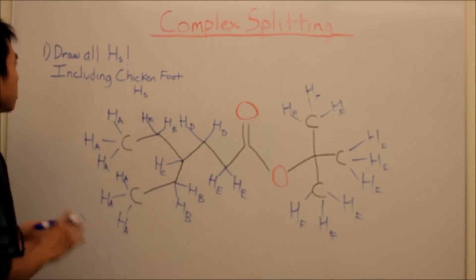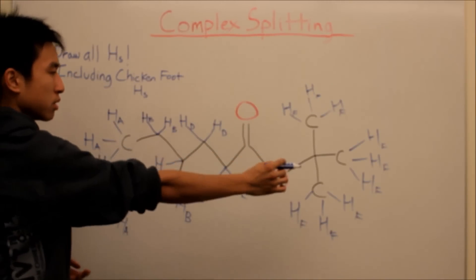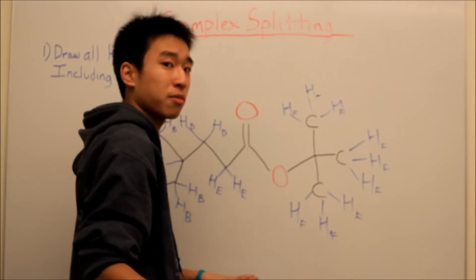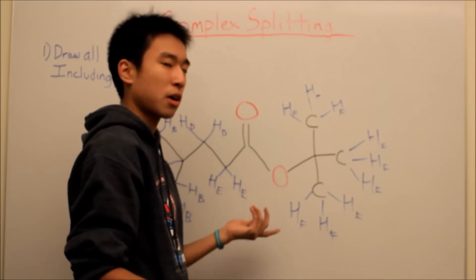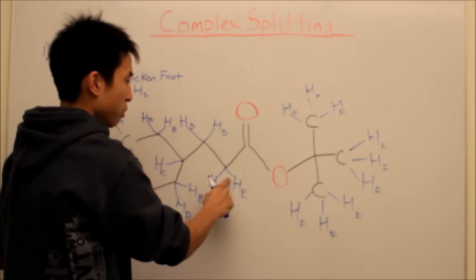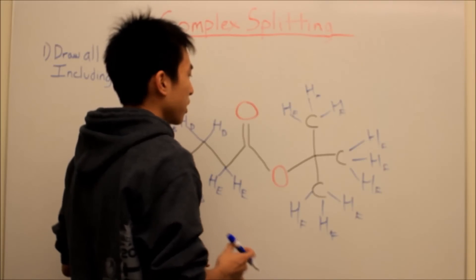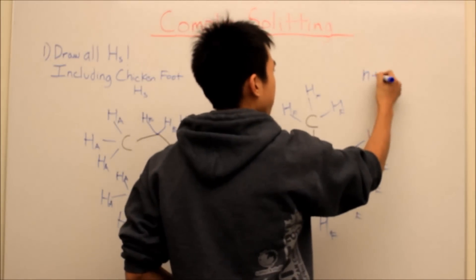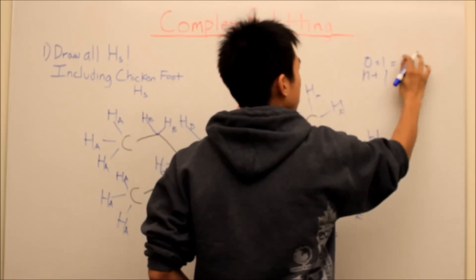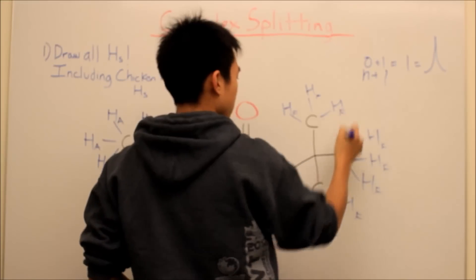So let's do complex splitting — let's figure out what the signals would look like on NMR. Let's start over here since these are a little simpler. You have nine equivalent HF hydrogens, so that's not going to affect the splitting pattern at all, because the splitting pattern only tells you what their neighbors are. They have no neighbors that are non-equivalent within three bonds distance — the closest non-equivalent hydrogen is six bonds away. So this one would just be a singlet, because zero plus one equals one, which is a singlet. These guys would just be a massive singlet.